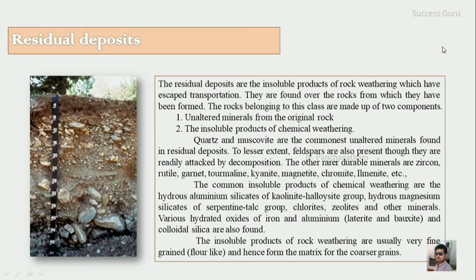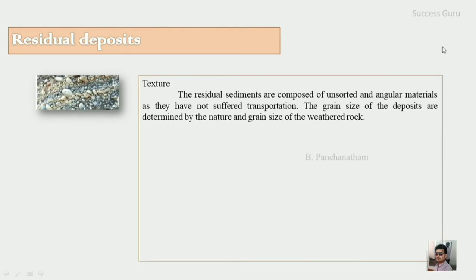Residual sediments are composed of unsorted and angular materials, as they have not suffered transportation. Transportation leads to well-sorting as well as rounding of grains. The grain size of the deposit is determined by the nature and grain size of the weathered rock — if the rock is coarse grained, you can expect a coarse grained residual deposit, and if fine grained, a fine grained deposit.